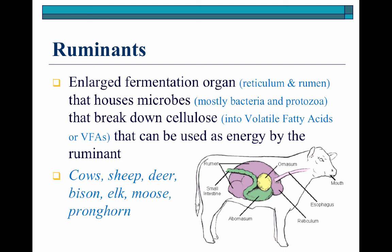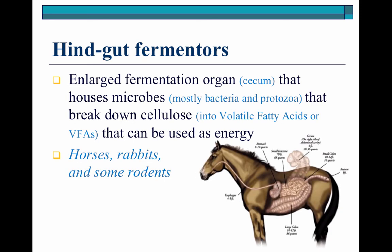Our ruminants on the domestic species side are going to be cows, sheep, and goats. On the wildlife species side, they're going to be deer, elk, moose, and pronghorns. And then our hindgut fermenters are going to be our horses as well as rabbits and some rodents. These digesters are going to have a cecum that's a little further down in their digestive tract — in horses, it actually sits on the barrel of their gut in their abdomen area. The cellulitic populations that occur here are also going to break down that cellulose into volatile fatty acids that can be used as energy as well.